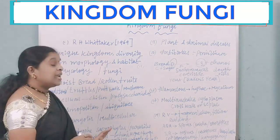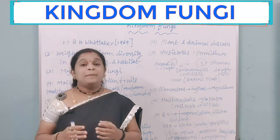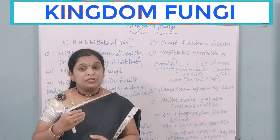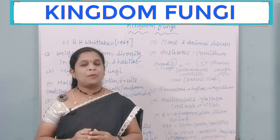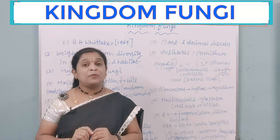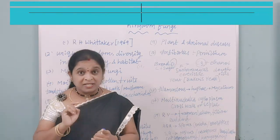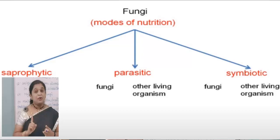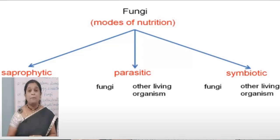Next, fungi show a heterotrophic mode of nutrition. Heterotrophic mode of nutrition means the organisms cannot prepare their own food and depend on other organisms for food. Among fungi, certain organisms exhibit parasitic mode of nutrition, some show symbiotic mode of nutrition, and others depend on dead and decaying organisms, which is called saprophytic mode of nutrition.